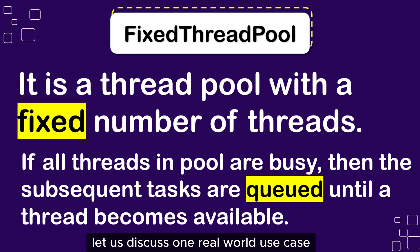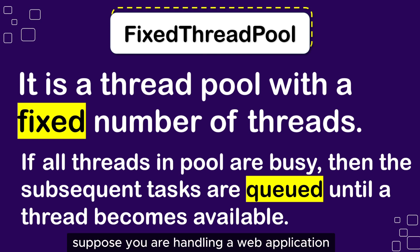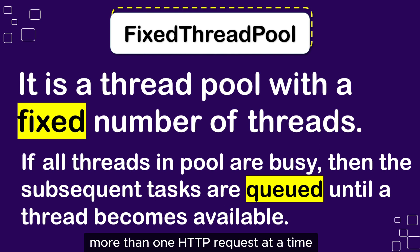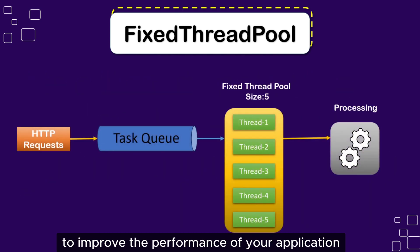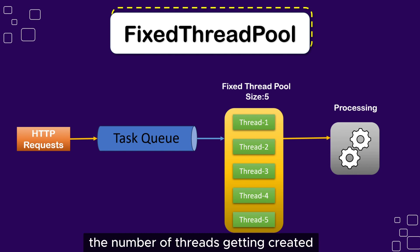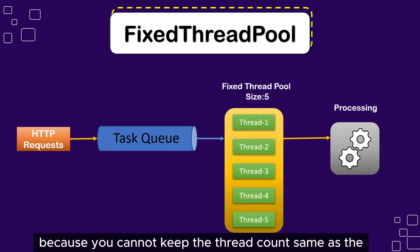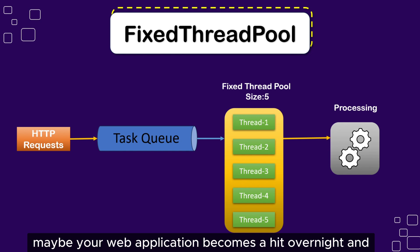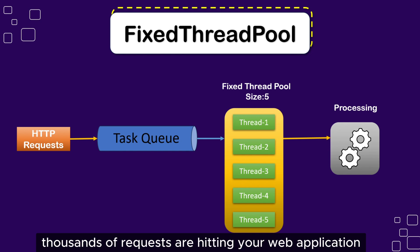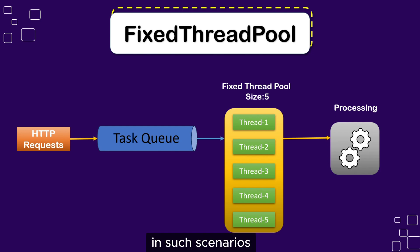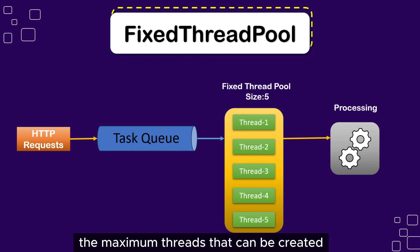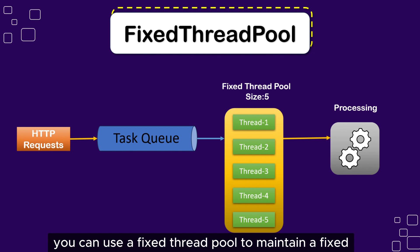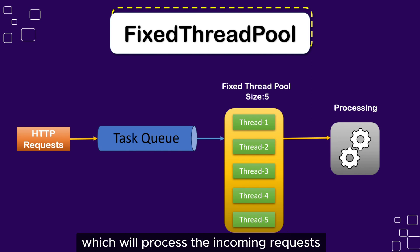Let us discuss one real-world use case for Fixed Thread Pool. Suppose you are handling a web application where you have implemented multi-threading to handle more than one HTTP request at a time to improve performance. Now you want to control the number of threads being created because you cannot keep the thread count the same as the number of HTTP requests. Maybe your web application becomes a hit overnight and thousands of requests are hitting it. In such scenarios, you have to limit resource usage by controlling the maximum threads that can be created to prevent overload. You can use a Fixed Thread Pool to maintain a fixed number of worker threads to process the incoming requests.